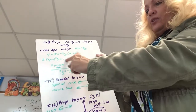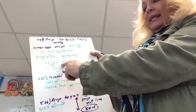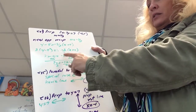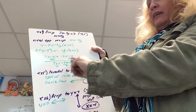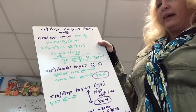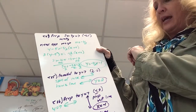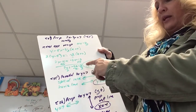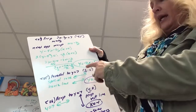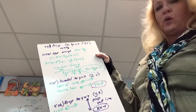Now I have to distribute: 2y minus 10 — not 2y minus 5 — equals, distribute the negative carefully, negative 3x minus 12. Let's get y by itself — add 10 to both sides: 2y equals negative 3x minus 2. Divide by 2 and we have y equals negative three-halves x minus 1.